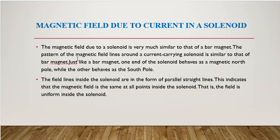The pattern of the magnetic field lines around a current-carrying solenoid is similar to that of a bar magnet. Just like a bar magnet, one end of the solenoid behaves as a magnetic north pole while the other end behaves as a south pole.